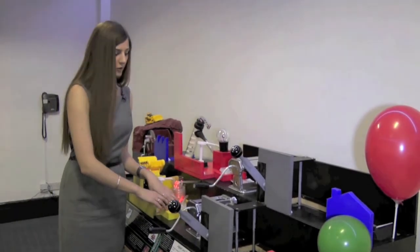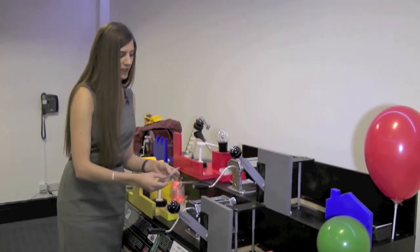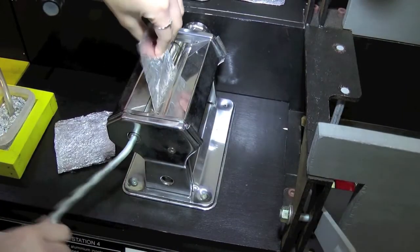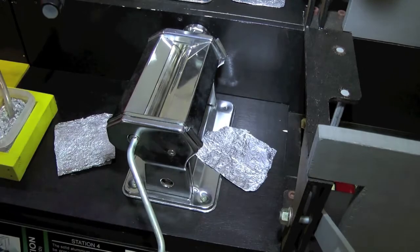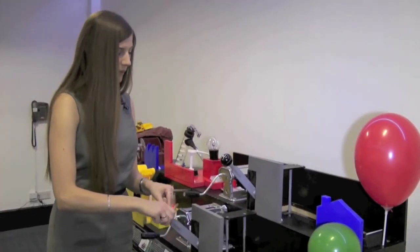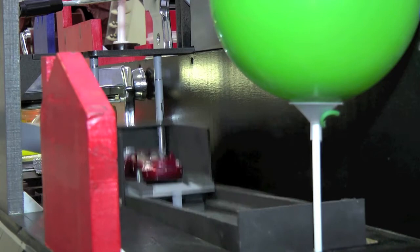Again, once the ingot has cooled, we can roll it into aluminium sheet. Take the sheet to an automotive stamper and create another vehicle.